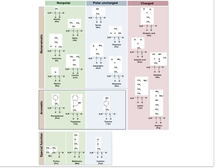So amino acids — just to take a look here — what gives them the identity is what we call the R group, R from the letter R. And each amino acid has a different R group, but they all have the common amino and the common acid group. So this is the organic acid group, and this is the amino group. And every amino acid has that.